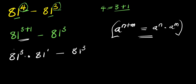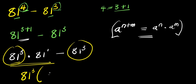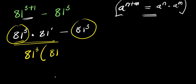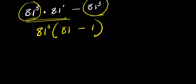Right now, 81 to the power of 3 appears on both sides, so I can factor out 81 to the power of 3. Dividing through, I get 81 to the power of 1, which is the same as 81, and then 81 to the power of 3 divided by 81 to the power of 3 gives 1. So I now have 81 to the power of 3 times (81 minus 1), which is 80.